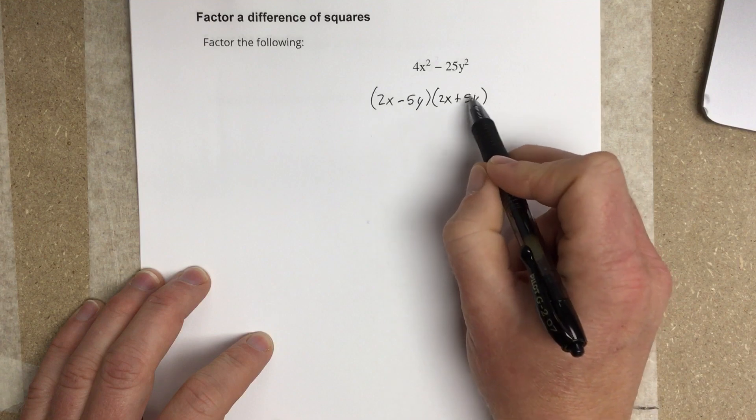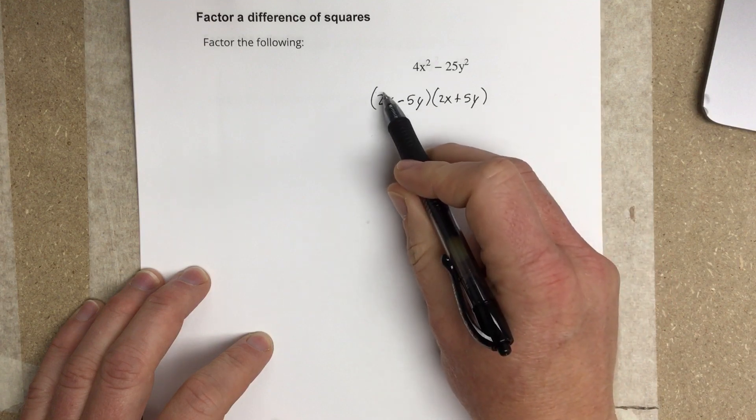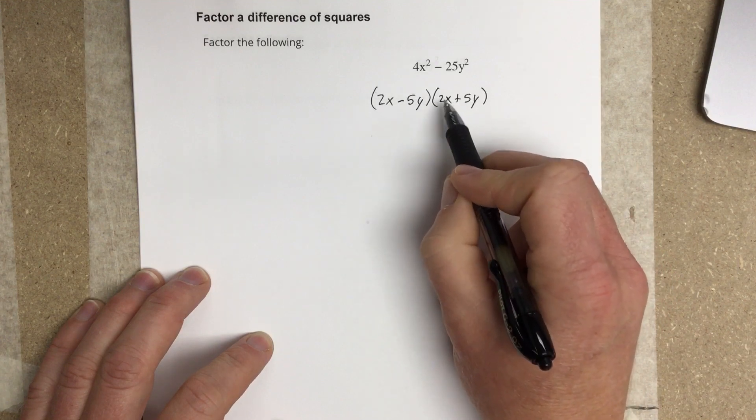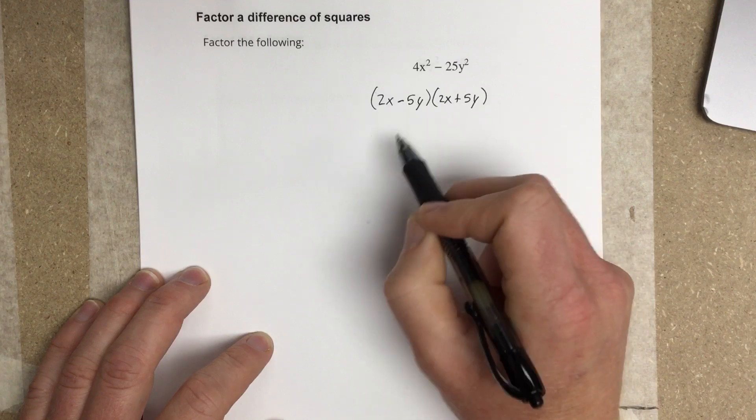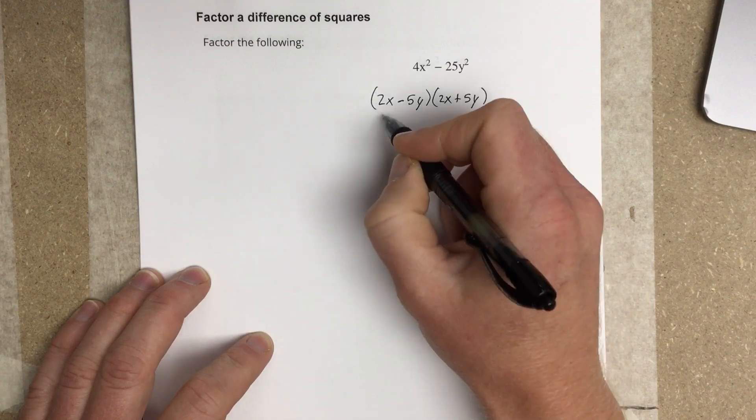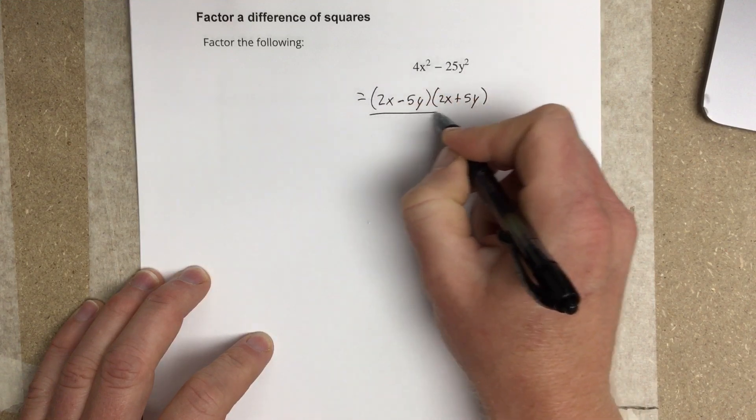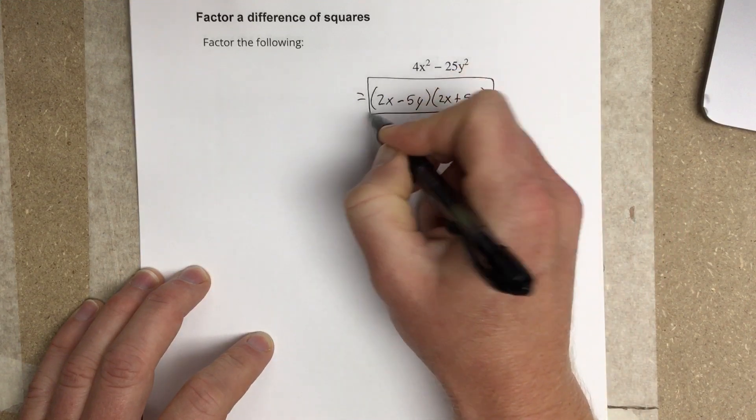So I get this negative 25y squared and this positive 4x squared. And when I multiply these together and then the outside together, those two terms cancel. So this factors to these two binomials.